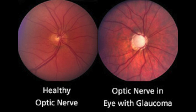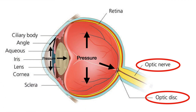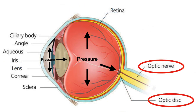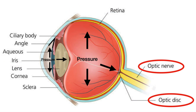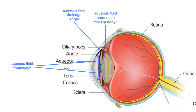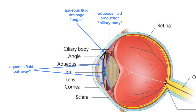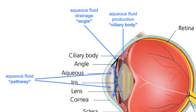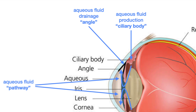In brief, glaucoma is a damaged optic nerve that is generally due to higher than normal eye pressure inside the eye. This higher than normal eye pressure is due to an imbalance between the production and the drainage of fluid within the front part of the eye, which is then transmitted to the back part of the eye and squeezes on the optic nerve. This fluid is called aqueous fluid and it is made in a location called the ciliary body and drained in a location called the angle.